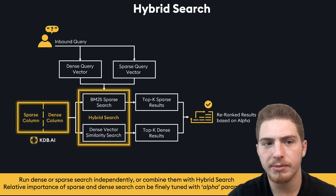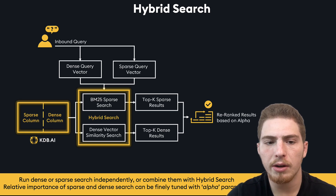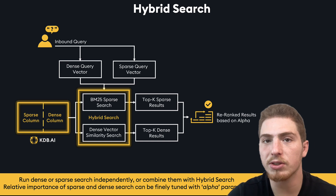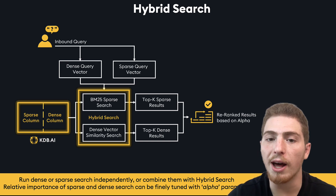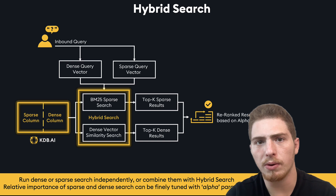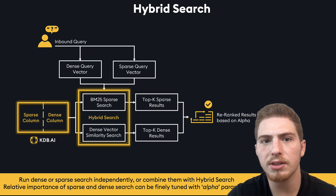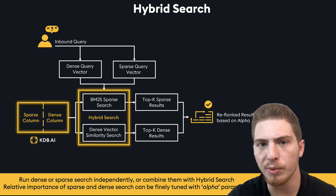Hybrid search takes an inbound query, creates a dense vector, creates a sparse vector, and then we could do two searches — a BM25 search and a dense vector similarity search. We take the top K results from each, and then we re-rank the results based on an alpha parameter. In KDBAI, we can also run dense and sparse search independently — we don't have to combine them with hybrid search. And this allows for some very interesting search pipelines.